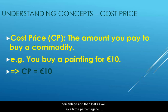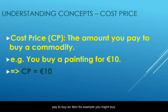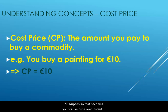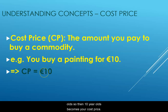Cost price is nothing but the amount you pay to buy an item. For example, you might buy a dozen apples for ten rupees — that becomes your cost price. In this example, let's say you buy a painting for ten euros, then ten euros becomes your cost price.